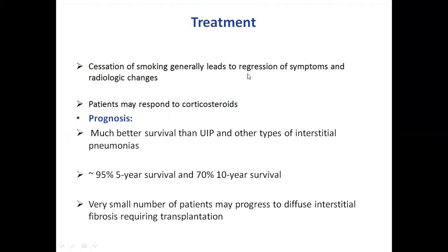Regarding treatment, the major treatment is cessation of smoking, which can generally lead to regression of the disease. Some patients may also respond to corticosteroids. Overall, the prognosis is much better than UIP and other types of interstitial pneumonia, and a very small number of patients can progress to diffuse interstitial fibrosis and require transplantation.